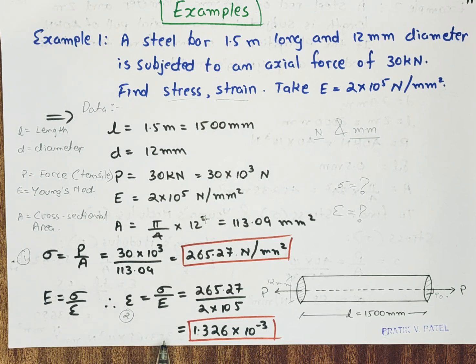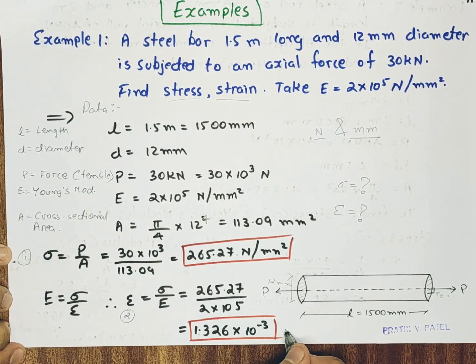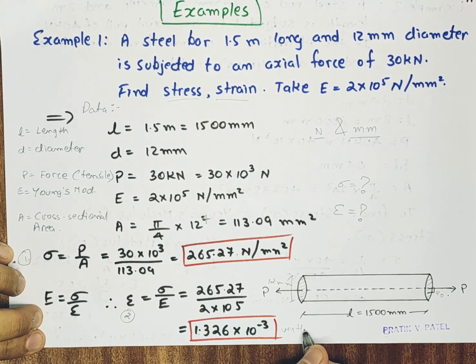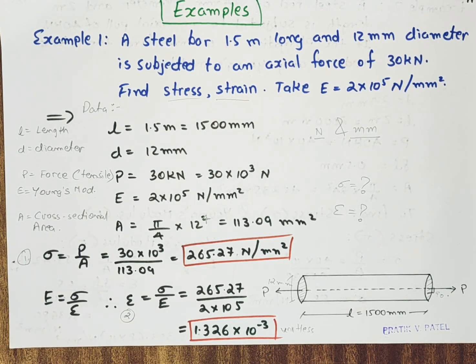And putting down the values I directly get the answer that is 1.326 into 10 raised to minus 3. And as we know strain has no unit, that is unitless. This is change in dimension upon original dimension.